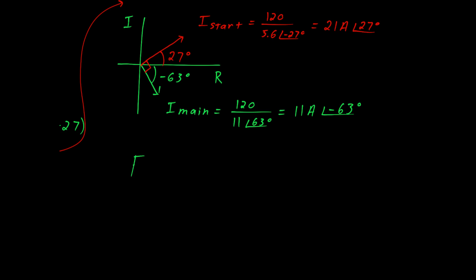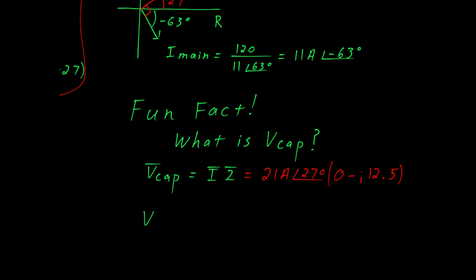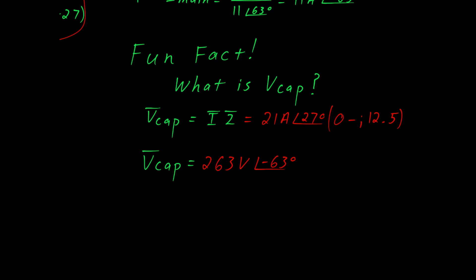I want to end this video on a fun fact and that is what is the voltage on the capacitor? Well the voltage on the capacitor is equal to the current times the impedance. We calculated the current as 21 amps at an angle of 27 degrees and the impedance of the capacitor is negative J 12.5. And when you multiply those two together you'll find that the voltage on the capacitor is 263 volts which is really interesting because that voltage is over twice what the source voltage is. And I'll leave it as an exercise to you to determine why it's so high.